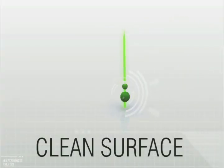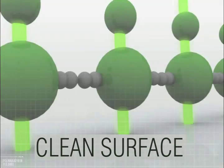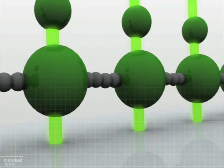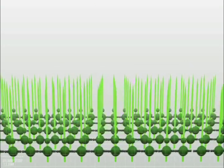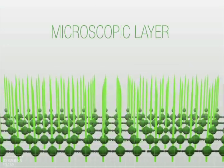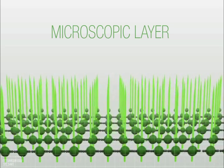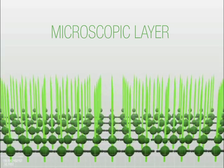At the same time, the spada molecules, or swords, bind strongly to the surface and to each other. Their electrical charge keeps them in a fixed upright position, creating a continuously active microscopic layer that protects the surface for a long time.